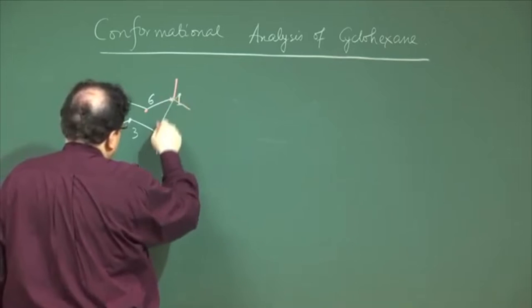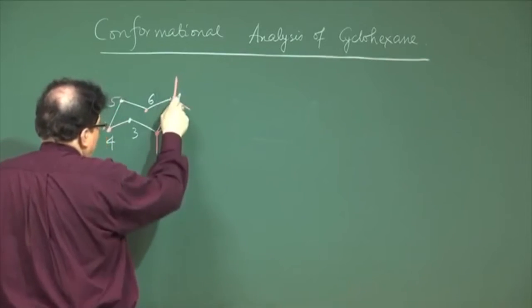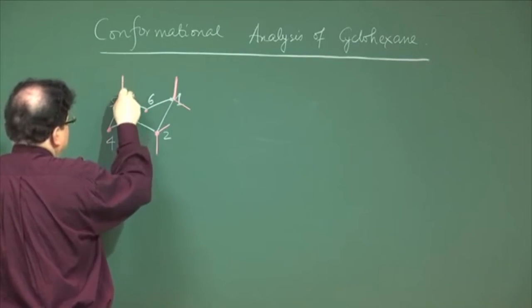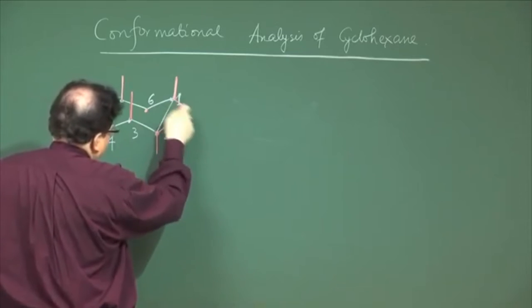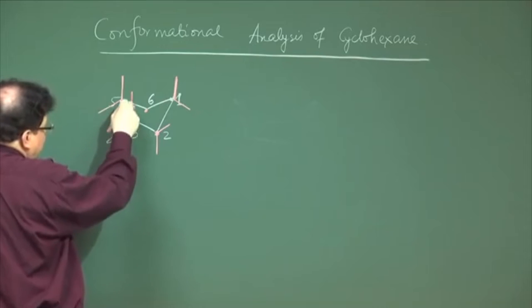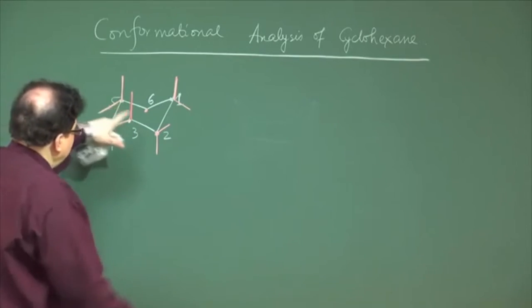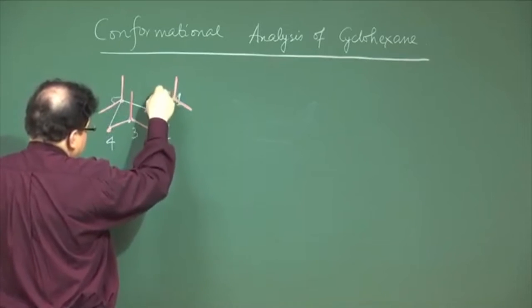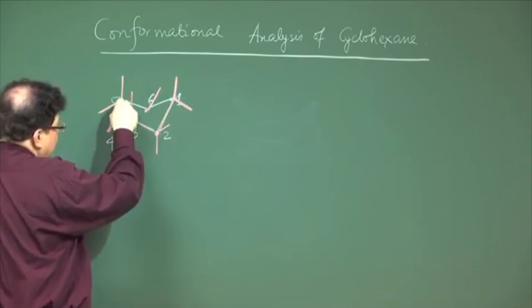C1, C3, and C5 each have one vertical bond pointing upward and one bond parallel to the next adjacent carbon-carbon bond. For C2, C4, and C6 occupying the bottom positions, they also have vertical bonds but pointing downward. Their other bonds similarly follow the parallel rule — each is parallel to the next adjacent carbon-carbon bond. Additionally, C4–C5 is parallel to C1–C2, C1–C6 is parallel to C3–C4, and C2–C3 is parallel to C5–C6.